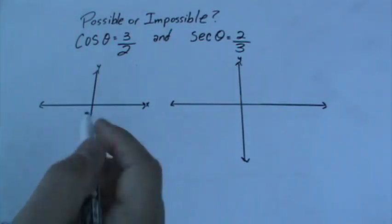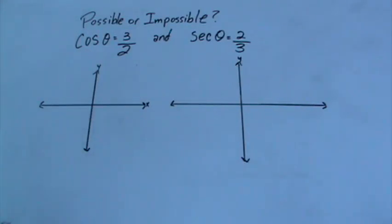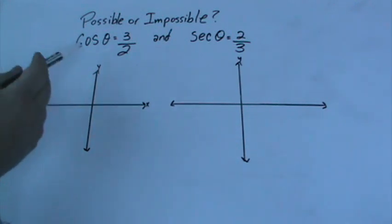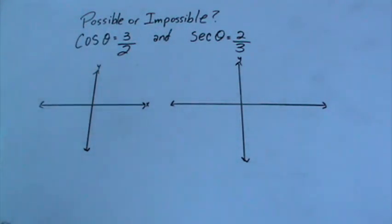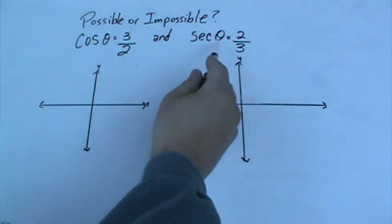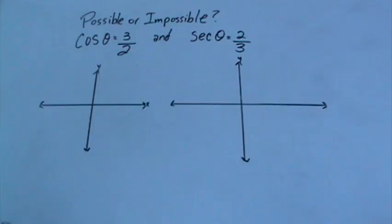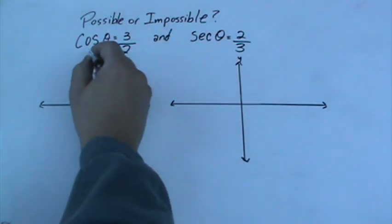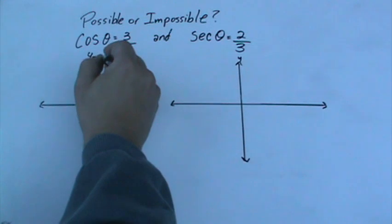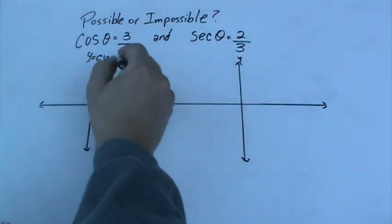So what we got to do is figure out if this is possible or impossible. We have cosine of theta is 3 over 2 and secant of theta is 2 over 3. What we need to imagine when we're seeing these type of problems is a graph. The first one we should be thinking of is y equals cosine of x.